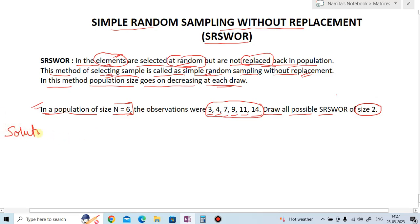Solution. It is very simple. Now first observation is 3. We have selected 3 randomly. Now make the pair. 3 and next element is 4. Next, 3 and 7. Then 3 and 9. Then 3 and 11. Then 3 and 14. That's for the first observation.